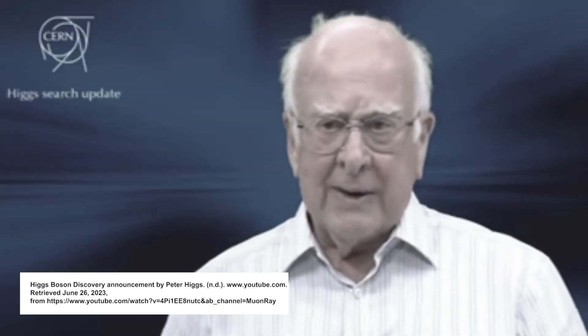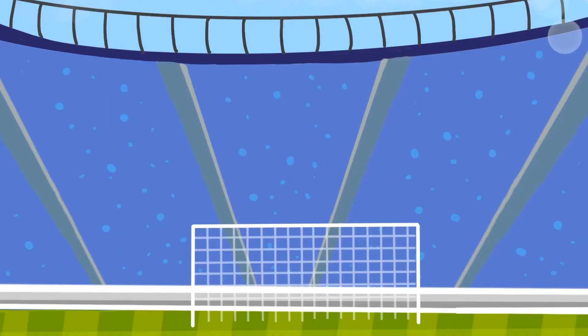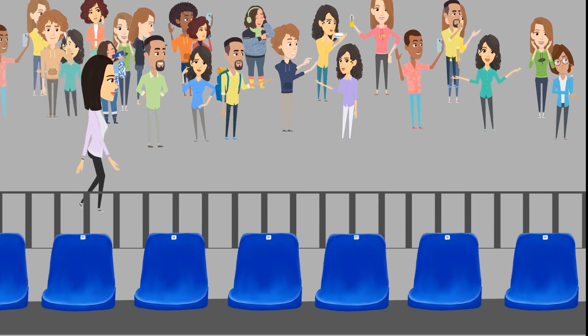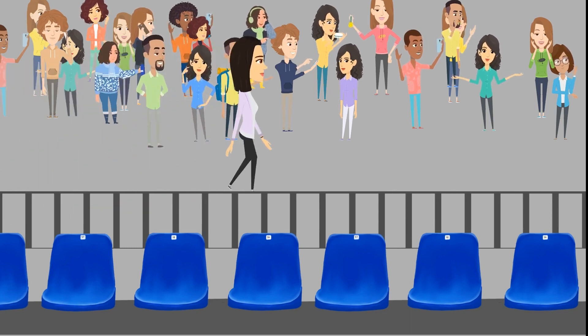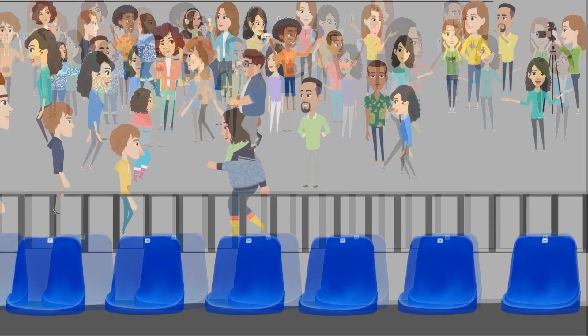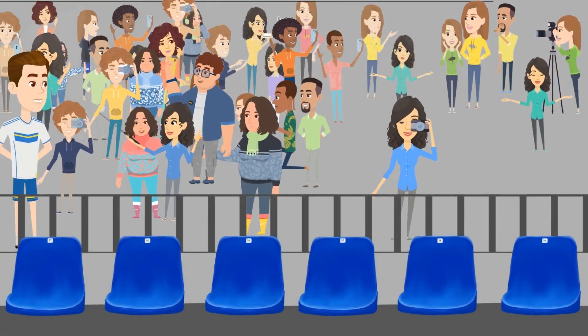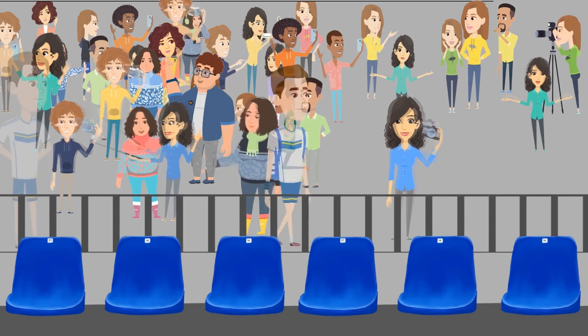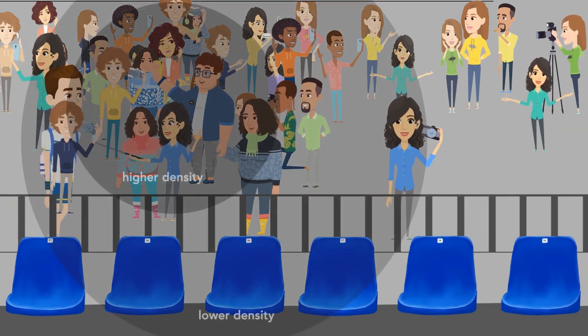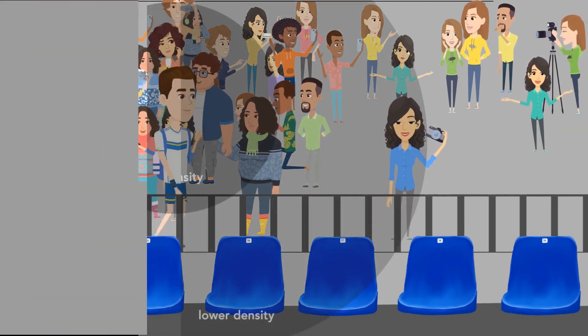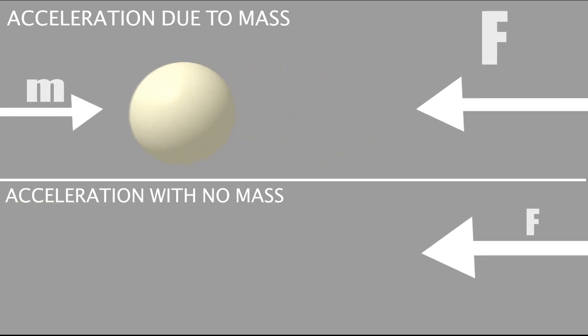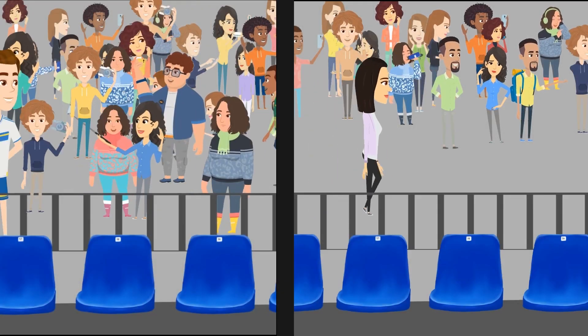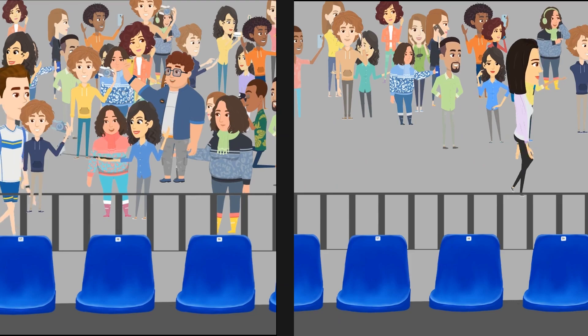In 1964, physicist Peter Higgs proposed a theoretical field to solve this problem. Going back to the sports arena — let's say I start walking down the aisle. No one pays attention to me, and I can just walk through. But if a famous athlete starts walking down the aisle, they are surrounded by fans and will struggle to get through. The density of the crowd around them will make the athlete resistant to motion, and this is analogous to inertial mass. The athlete interacts with the crowd more than I do, and therefore moves slower.